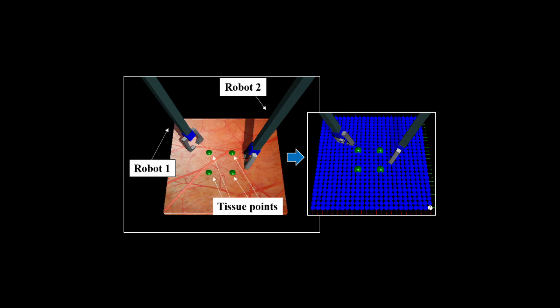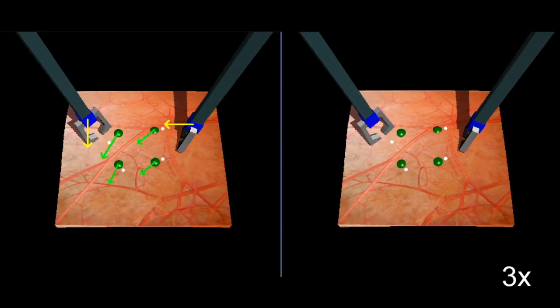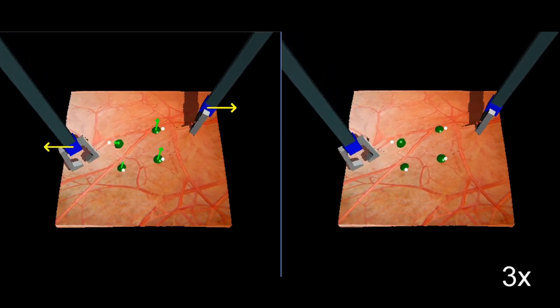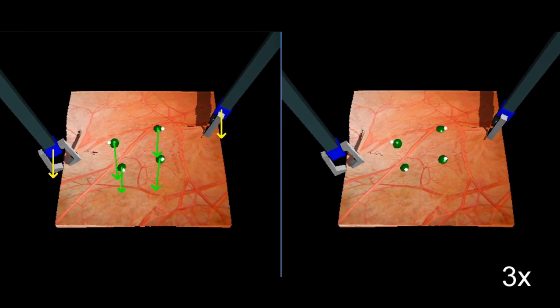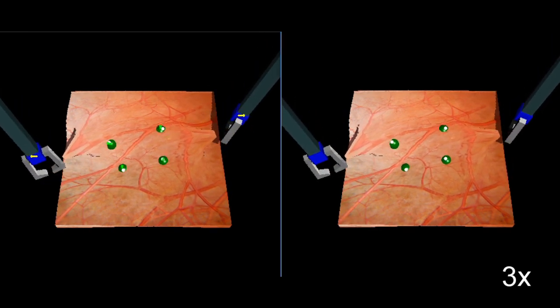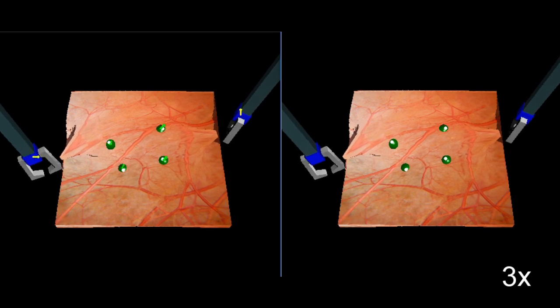To verify the performance of the controller, a tissue manipulation simulation was designed. We used the CHI3D open-platform simulation to model the soft tissue. Green markers are attached to the tissue points and the wrists of the robots are colored blue. Both reinforcement learning and learning-from-demonstration algorithms were implemented and compared in the simulation.